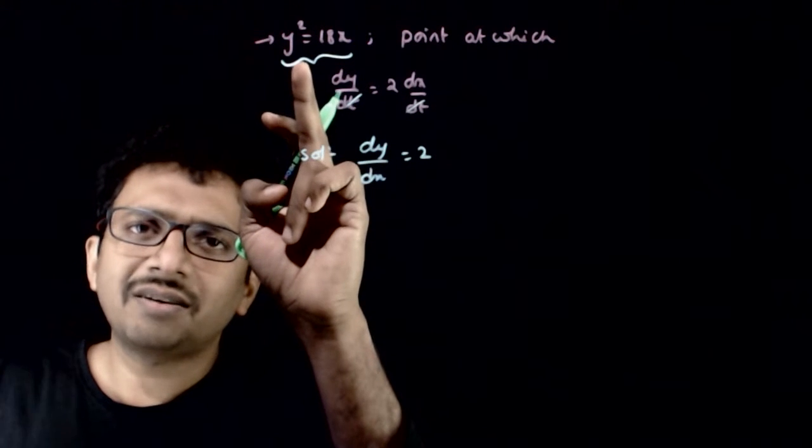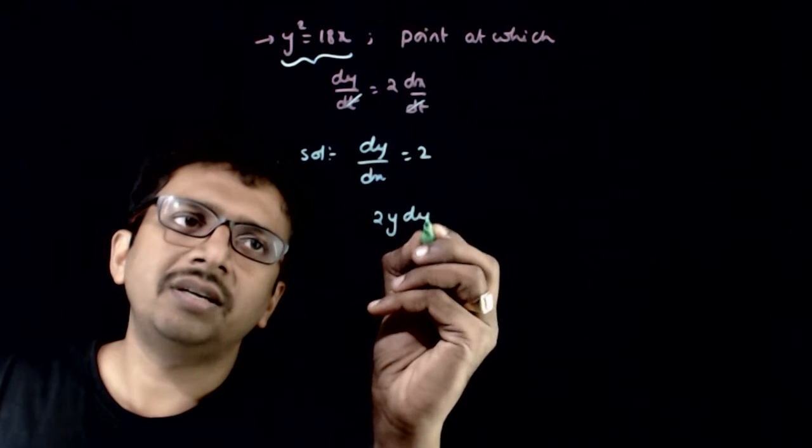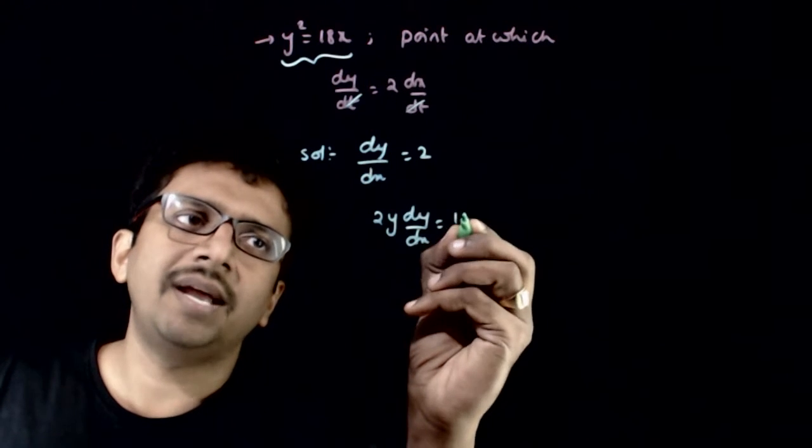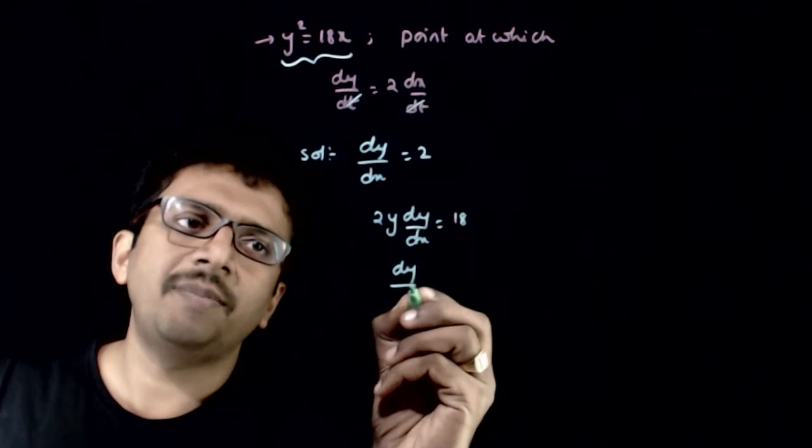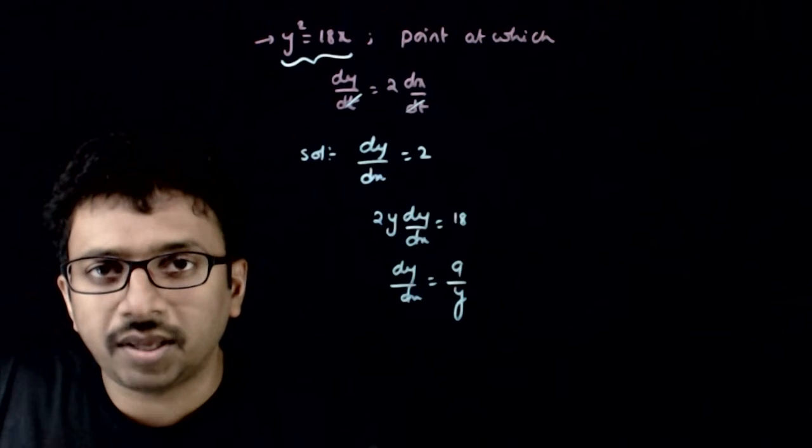Let us just find the value of dy by dx. 2y dy by dx is equal to 18, so dy by dx is equal to 9 by y.